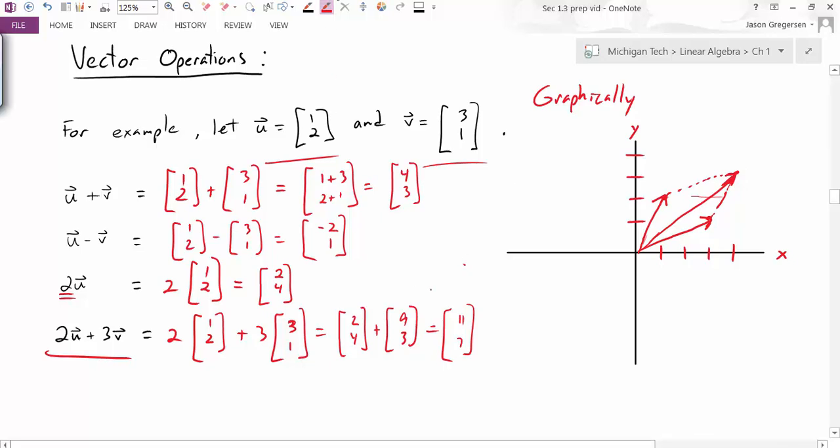Now what about scalar multiplication? I took two times the vector u, I got the vector 2, 4. If I plot that vector 2, 4, it will look something like this.